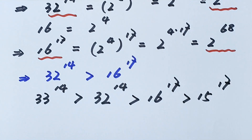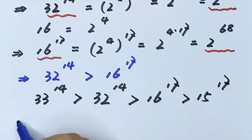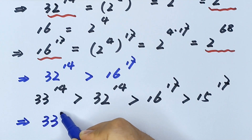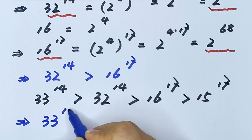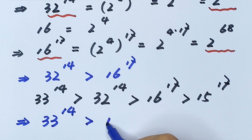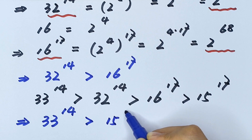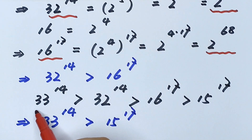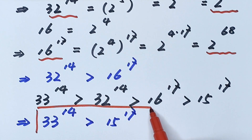So we can deduce that 32 to the power of 14 is more than 15 to the power of 17. This is the final answer.